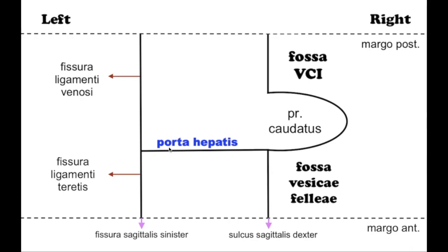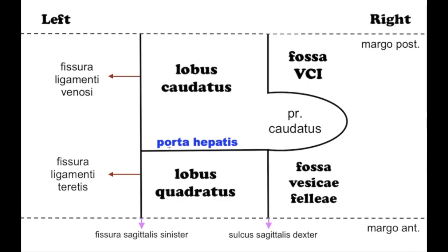In front of the porta hepatis is the quadrate lobe; behind it, the caudate lobe. The caudate lobe lies between the fossa for the inferior vena cava and the fossa for the ductus venosus. On the right, it is connected with the undersurface of the right lobe of the liver by the caudate process.